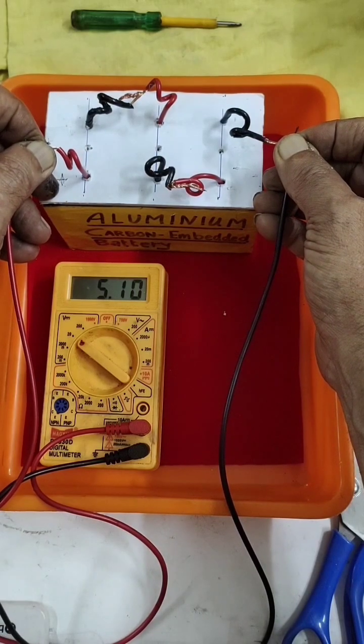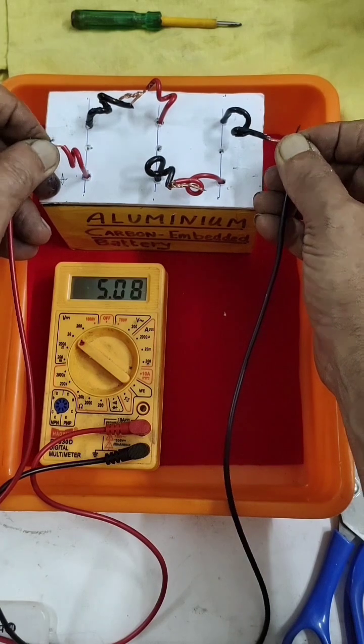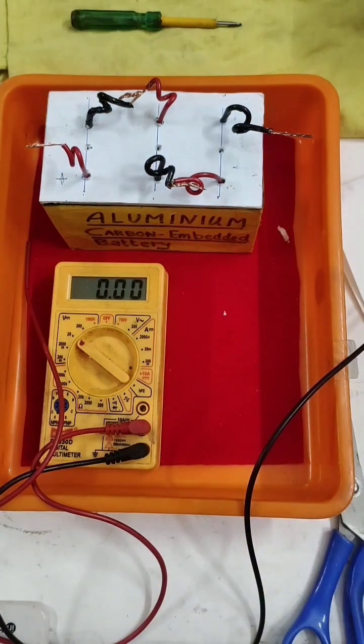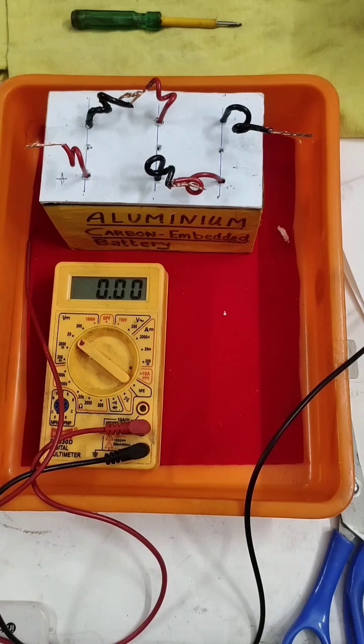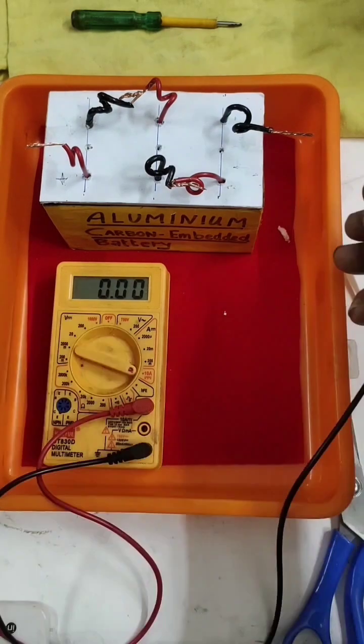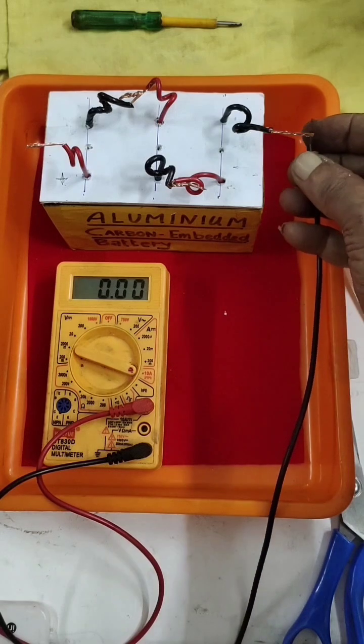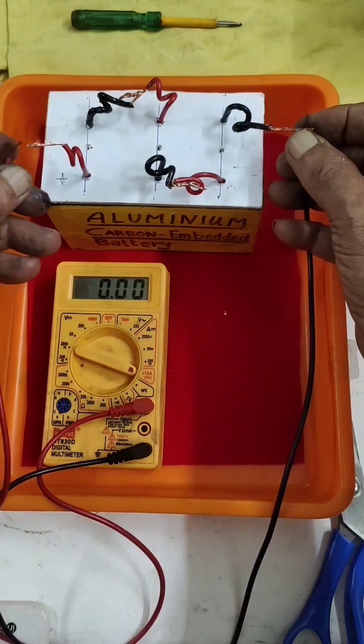We shall be able to see, friends, 5.1 volt. It is able to gain in charging. We will see the current it gains. Then this is only one cycle. If you charge, discharge like that, you can see better.